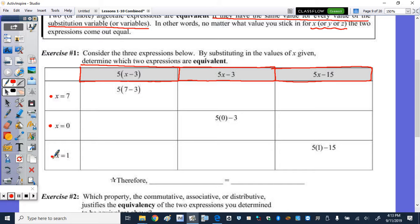And whichever columns give us the same value means the expressions above are equivalent. So you can see the first one, I did already plug in the x. So in the next row, we need to plug in the 0 for x. And then we need to plug in the 1 for x.